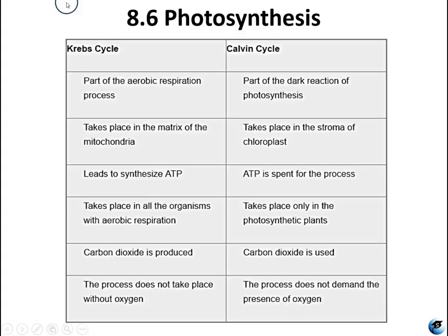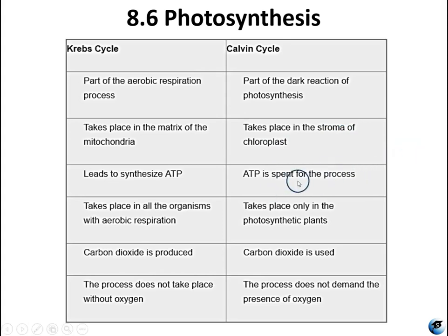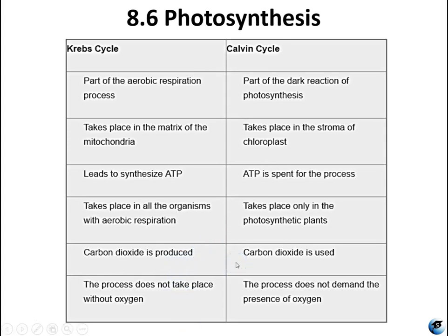The Krebs cycle is part of aerobic respiration; the Calvin cycle occurs in the light-independent dark reactions of photosynthesis. Krebs cycle happens in the mitochondria; the Calvin cycle happens in the stroma of chloroplasts. The Krebs cycle yields ATP; the Calvin cycle uses ATP to synthesize organic sugars from CO2. The Krebs cycle takes place in all organisms capable of aerobic respiration; the Calvin cycle only occurs in photosynthetic organisms. CO2 is produced in the Krebs cycle, used up in the Calvin cycle, and the Krebs cycle requires oxygen while the Calvin cycle does not.